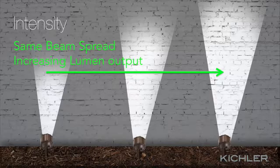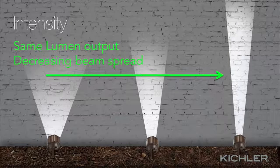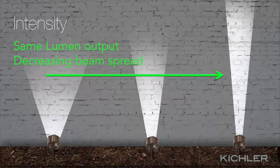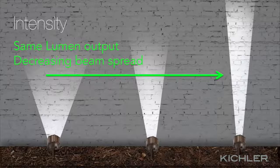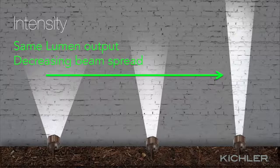We'll talk more about selecting fixtures with proper lumen output in the second half of this course. The beam spread of accent lights also affects the intensity of light: if two fixtures have the same lumen output, the fixture with the narrower beam spread focuses light over a smaller area than the fixture with the wider beam spread. The fixtures produce the same amount of light — it just gets spread out differently.